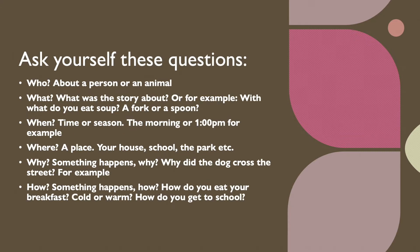For us to understand a story, it's better if we ask ourselves these questions. Who? About a person or an animal that is in our story. What? What was the story about? Or for example, with what do you eat soup — a fork or a spoon? When? A time or season, like the morning or 1 p.m. Where? A place, like your house, school, or the park. Why? Something happens — why? Why did the dog cross the street, for example.